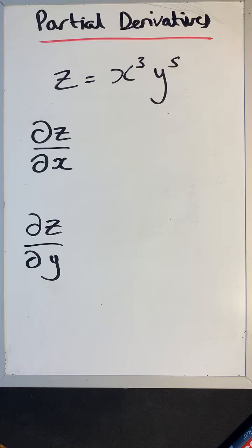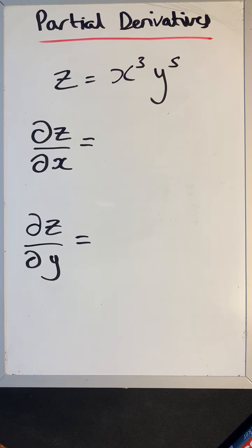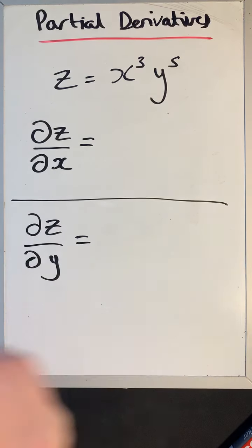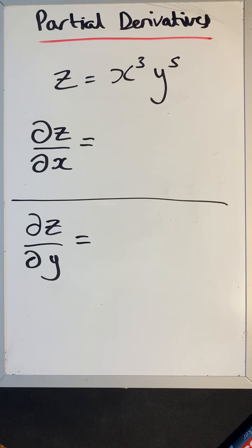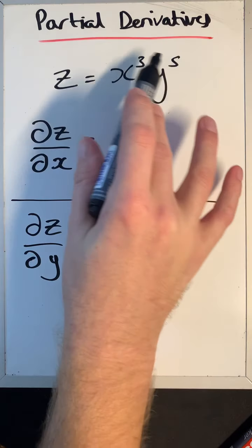How do we find these first-order partial derivatives? When we're differentiating with respect to x, what we do is treat y as a constant. It can be a little bit confusing to begin with — treating letters as numbers — but after a few practice examples it's not too bad. So we differentiate the x's here.